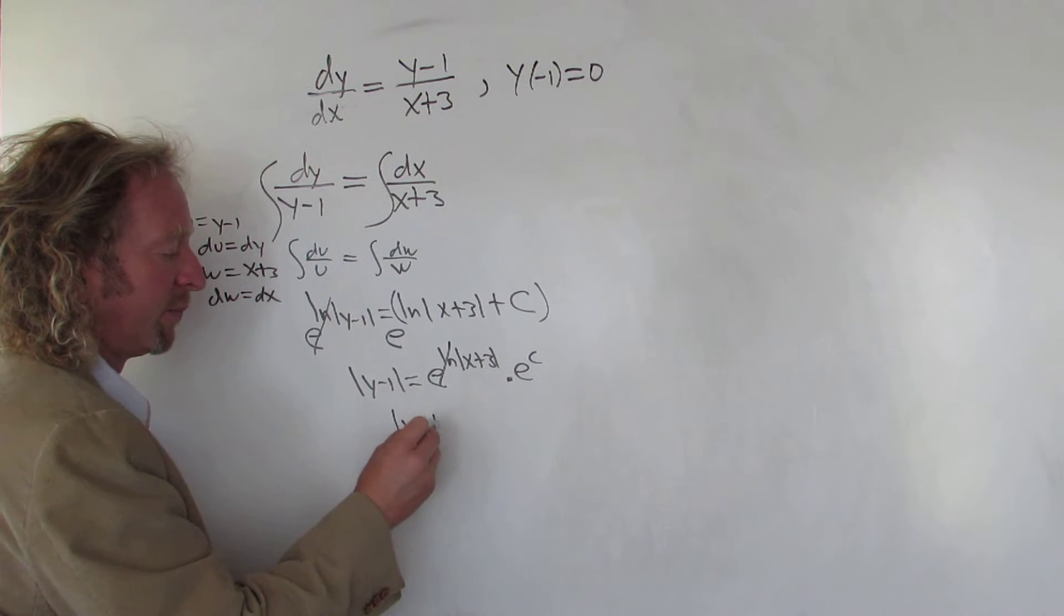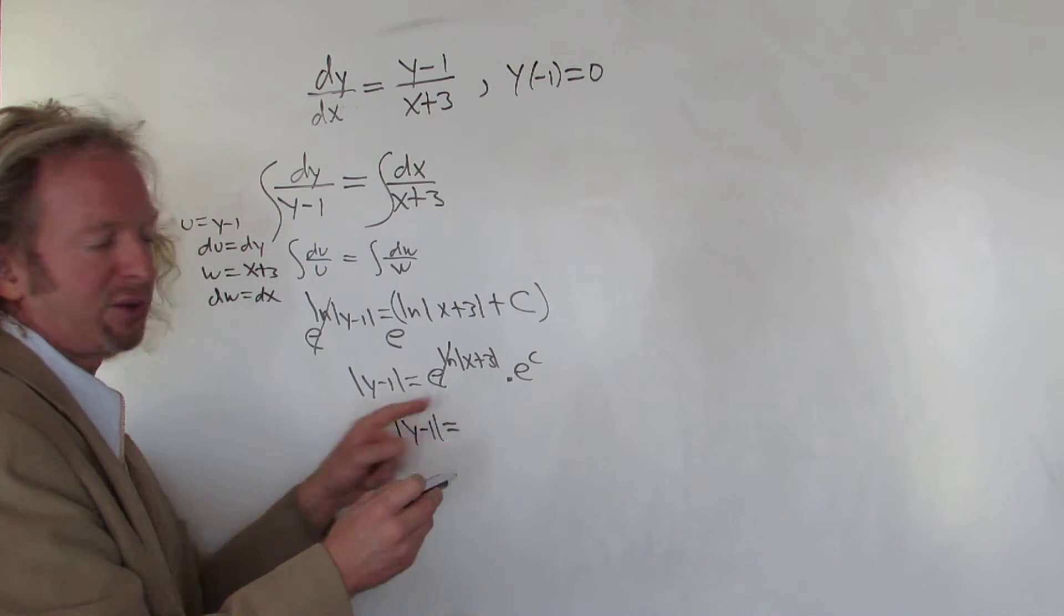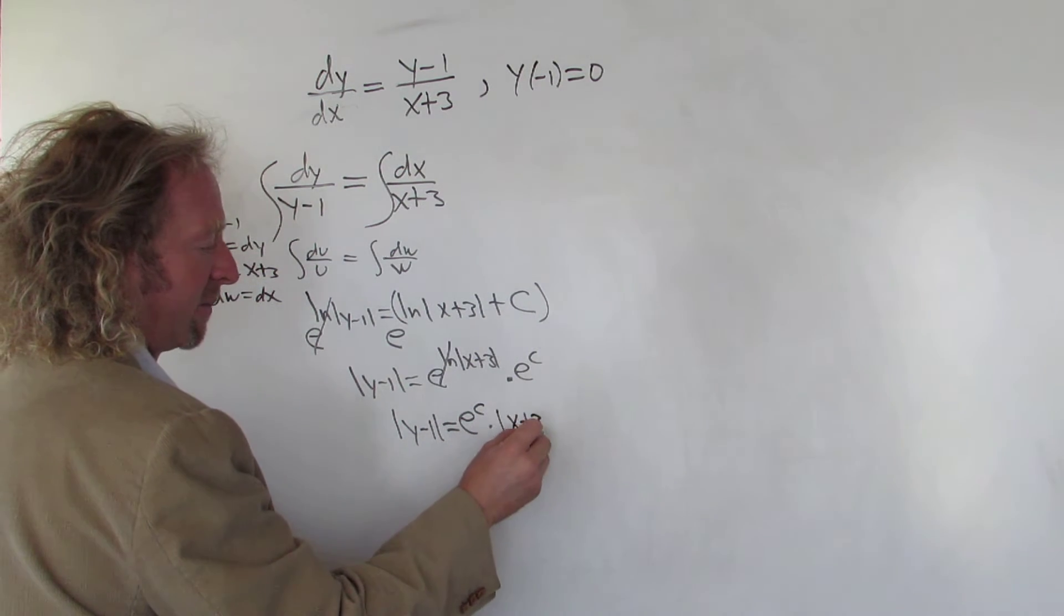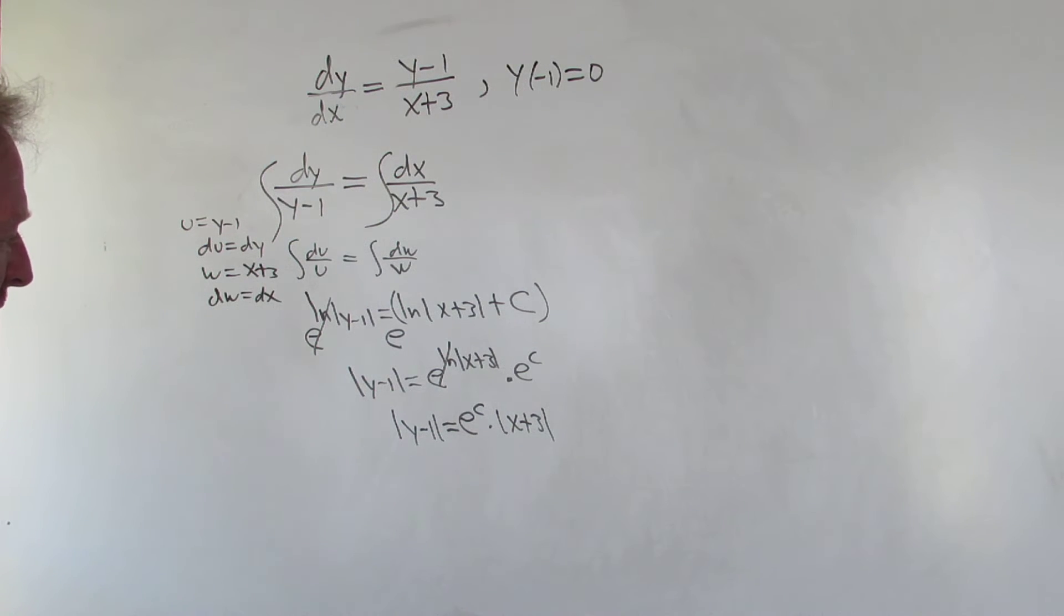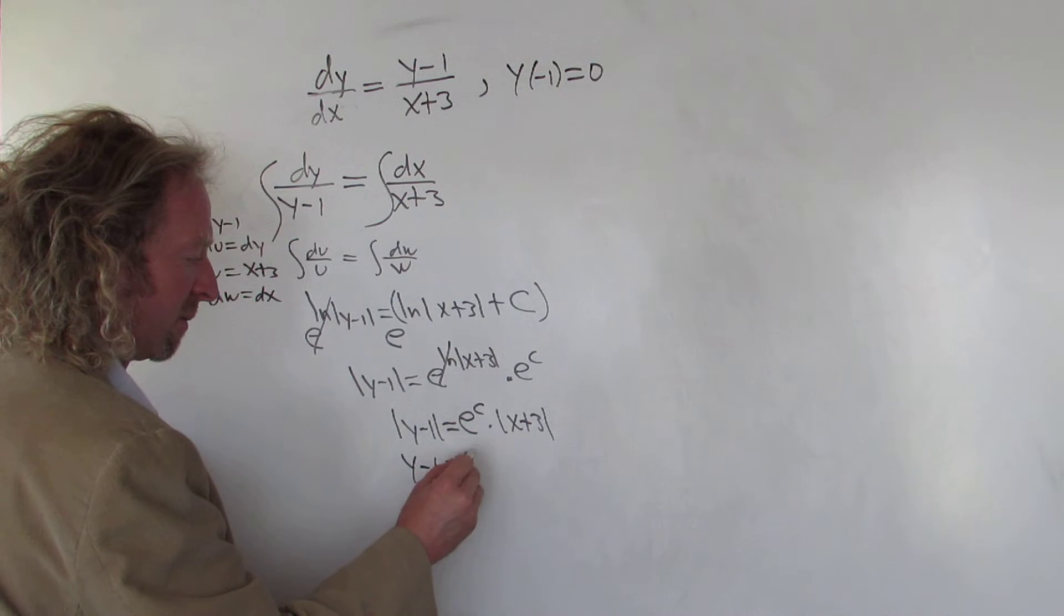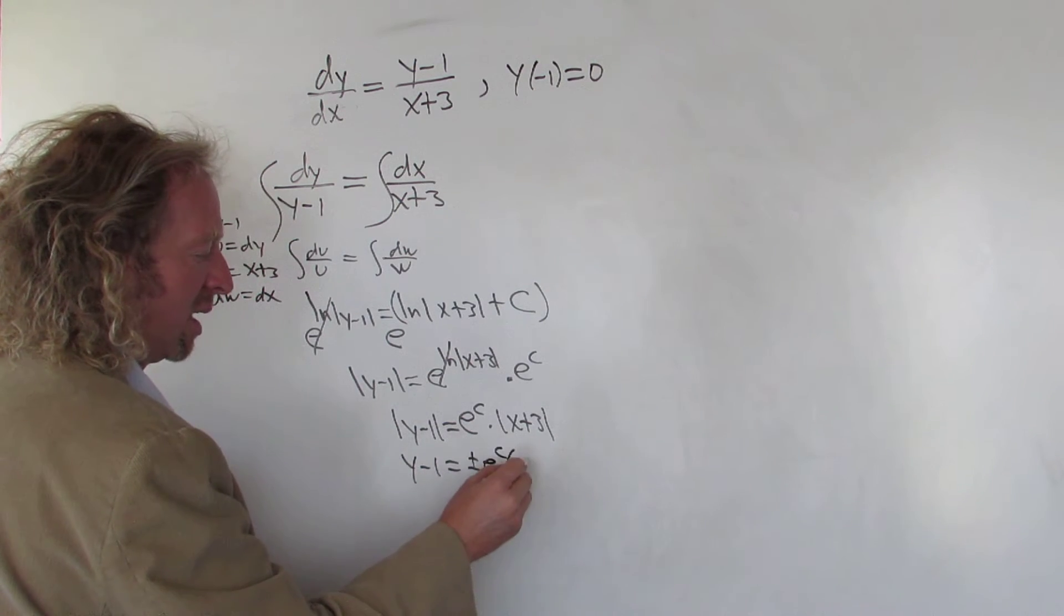So we get the absolute value of y minus one equals e to the c times the absolute value of x plus three. And then we can drop the absolute value. When we do that, we'll get a plus or minus - plus or minus e to the c, x plus three.